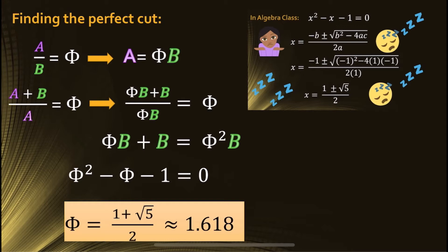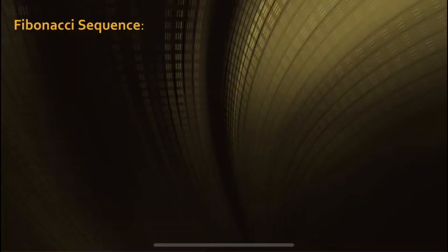This ratio, represented by the Greek letter phi, is the golden ratio. There's one more thing that is related to the golden ratio that I'd like to talk about before looking at some real-world examples.